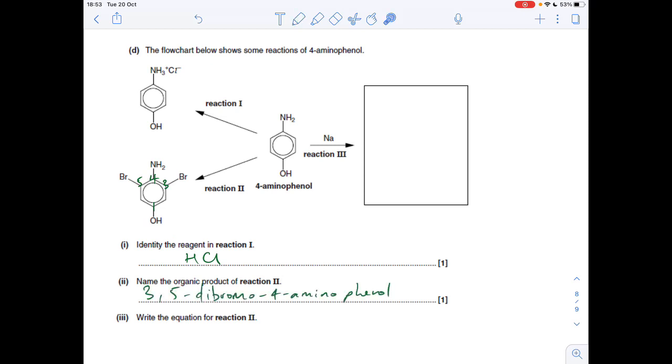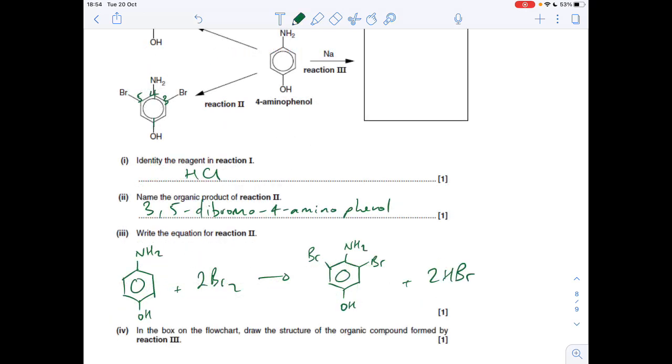Next part, we've got to write the equation for reaction 2. So you can see going from here to here, we've substituted a hydrogen for a bromine. And that's happened twice. Now to make that happen, you need to react it with 2 moles of Br2. And we're going to get 2 moles of HBr. So there's that equation there.